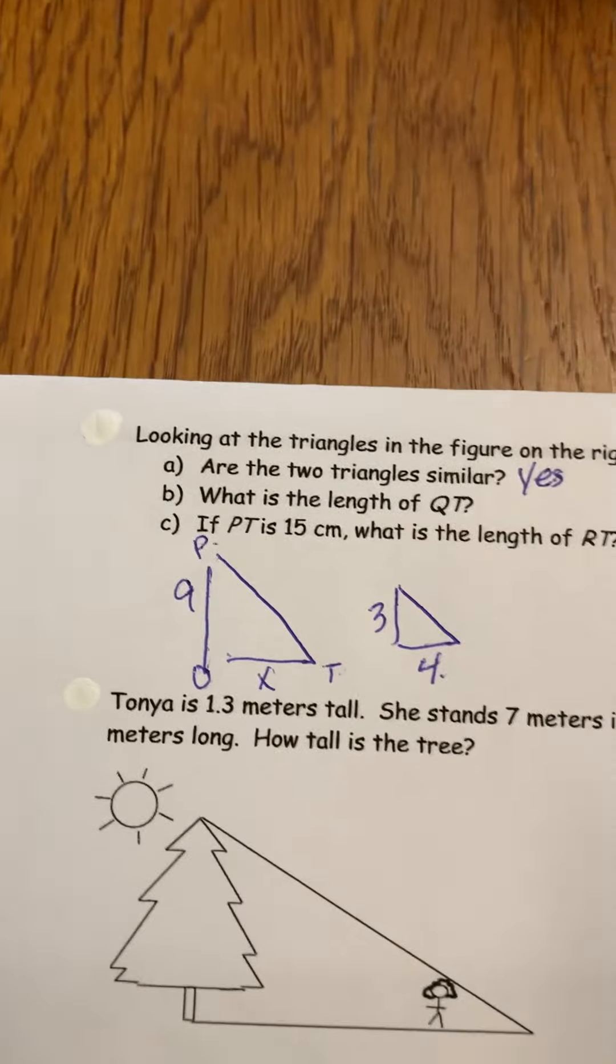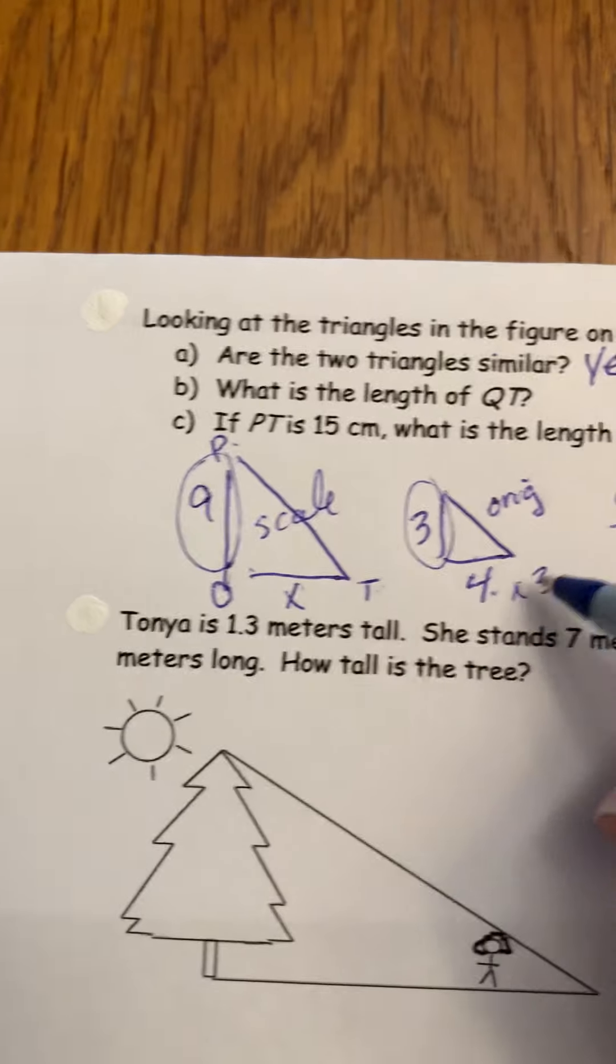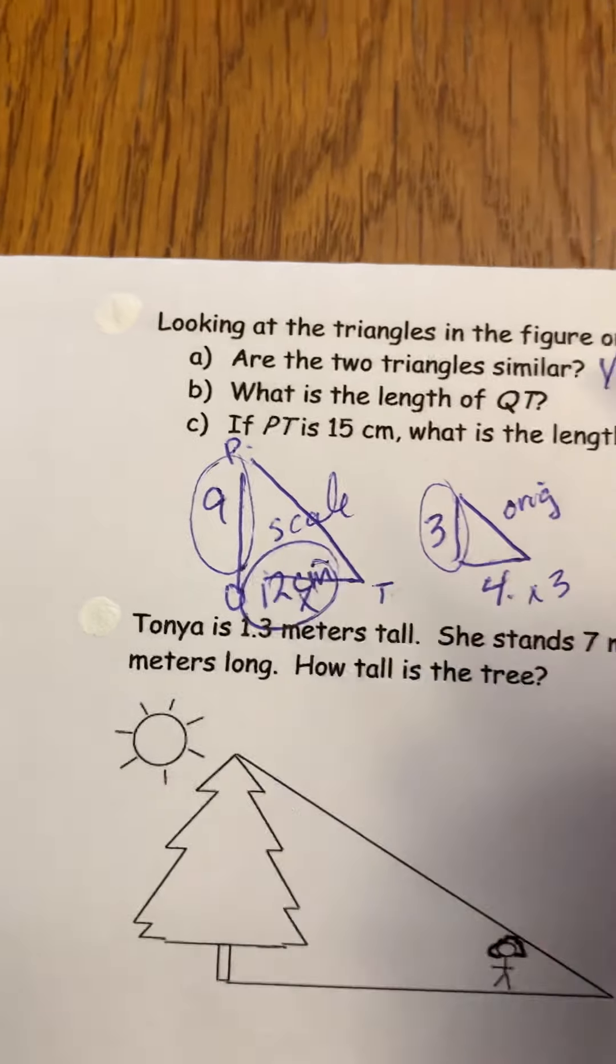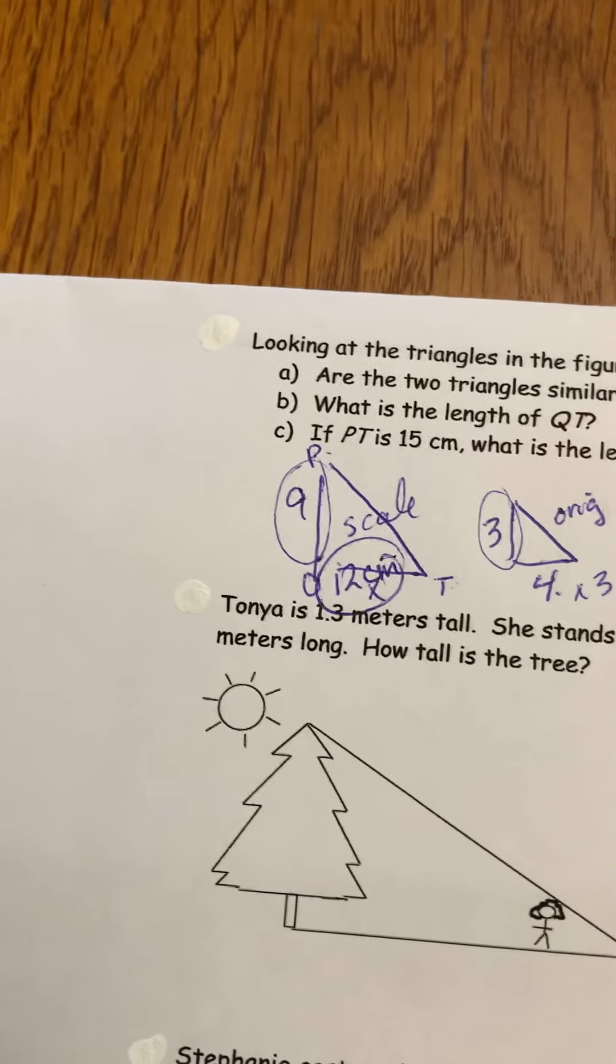So do we have corresponding sides? Indeed we do. Because we have all the measurements here, I'm going to call that the original and this is going to be the scale. So I can do this using scale factor. So I can go scale over original, nine over three, which is three. And once I figure that out, I can take my original and multiply it by three and get 12 here, 12 centimeters.